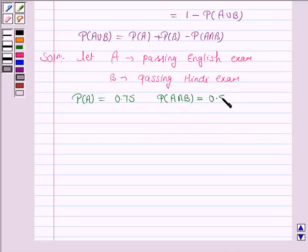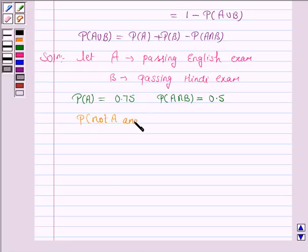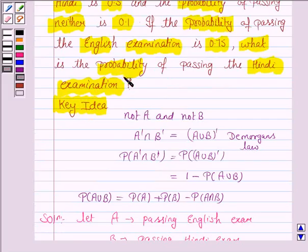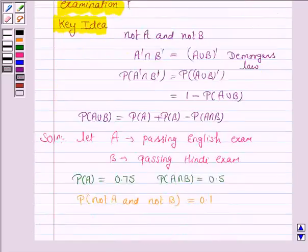We are given that the probability of passing in neither examination, that is NOT A and NOT B, is 0.1. We have to find the probability of B, the probability of passing the Hindi examination.